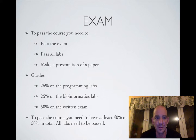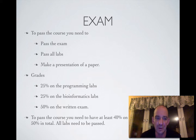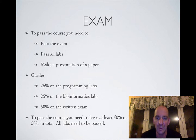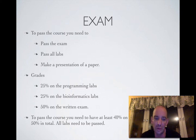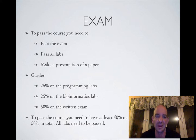To pass the course you need to pass the exam, pass all the labs, and make the paper presentation. The grades are weighted as 25% programming labs, 25% mathematics lab, and 50% written exam. You need at least 40% on the exam itself and 50% in total to pass the course, and you need to complete all labs with two or fewer returns each.